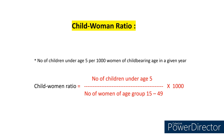To start with child-woman ratio, it is nothing but the number of children under age 5 per thousand women of child-bearing age in a given year. So the formula becomes: in the numerator, we take the number of children under age 5 divided by the number of women of age group 15 to 49 — because we are talking about child-bearing age — multiplied by 1000.